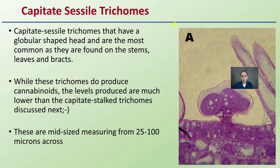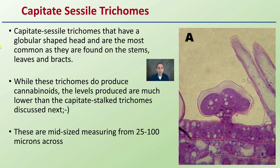Then we have the capitate-sessile trichomes. These have a globular-shaped head and are the most common, found on the stems, leaves, and also the bracts. While these trichomes do produce cannabinoids, the levels produced are much lower than the capitate-stalked trichomes. They are mid-sized, measuring from 15 to 100 microns across.